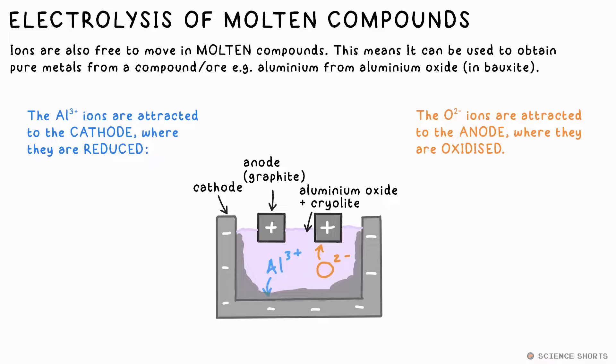This can be used to obtain pure metal from its compound like aluminum from aluminum oxide, which is found in the ore bauxite. Similar to electrolyzing just water, the ions aren't competing with anything else, so the cations are reduced at the cathode and the anions oxidized at the anode. In this specific case, that results in pure aluminum coating the cathode, while oxygen is made at the anode. This requires a lot of energy, not least because you need to melt the compound first. That's why sometimes another substance will be added to reduce the melting point. In this case, that's something called cryolite. Can you give the half equations for what's happening at each electrode here?